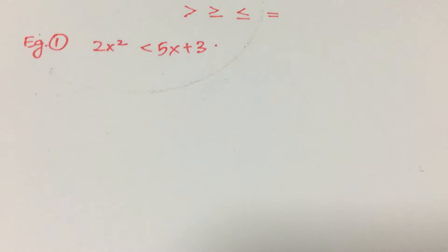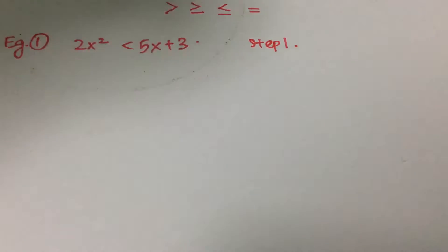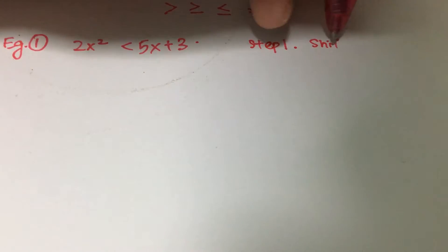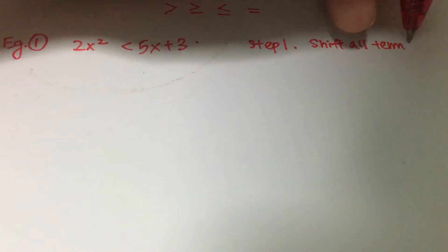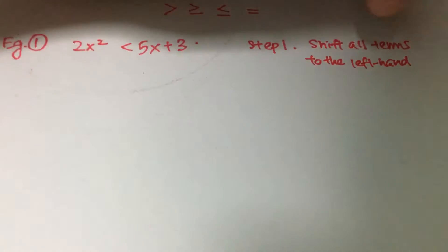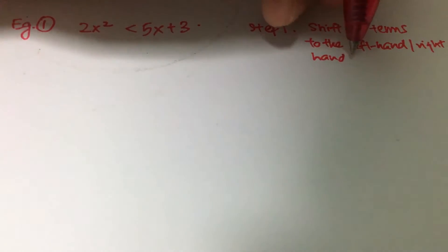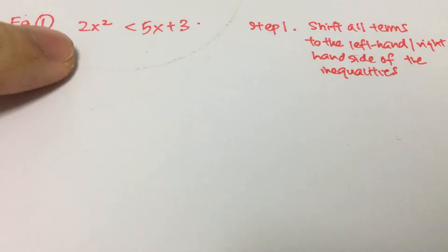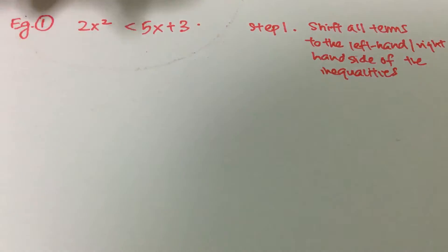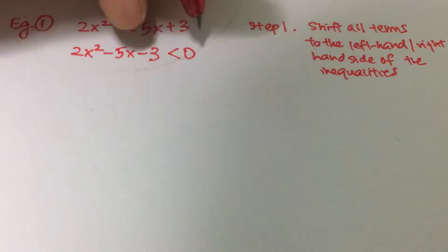When we actually deal with inequalities, the first thing we have to do — step number one — is to shift all terms to the left-hand side or the right-hand side of the inequalities. In this case, I will shift all the terms to the left-hand side, giving us 2x squared minus 5x minus 3, and that gives you less than zero.